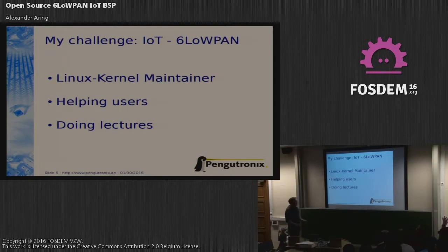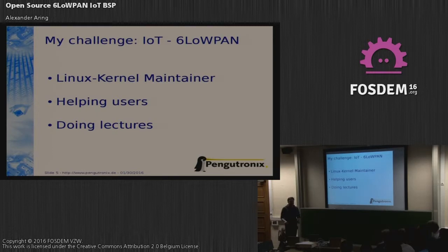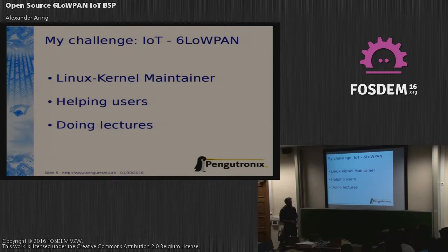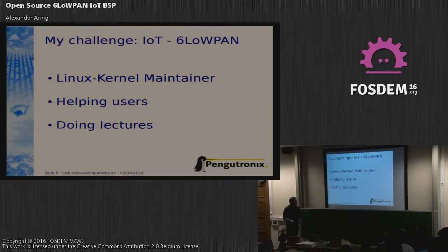The users are asking many times how to use the 6LoWPAN stack on Linux and how to do the kernel stuff — for example, cross-compiling it if you want it on a Raspberry Pi. For the Raspberry Pi, they replaced the Raspbian image with the mainline kernel, not the API kernel anymore, and then they all run into the same issues.